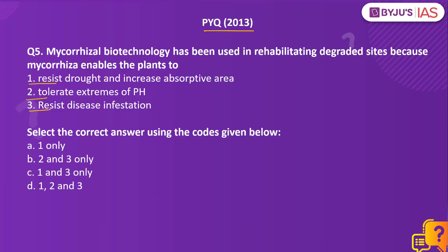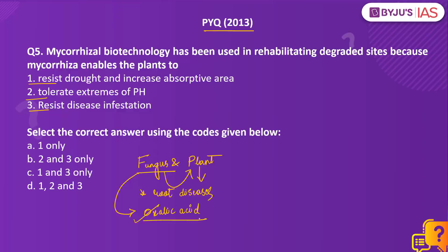A mycorrhiza is a mutual symbiotic association between a fungus and a plant. It refers to the role of the fungus in the plant's rhizosphere, that is its root system. The mycorrhizal fungi helps the host by absorbing nutrients and water from the soil and transferring them to the host. It also helps host plants withstand root diseases by producing oxalic acid, which suppresses root diseases. Mycorrhizal plants have high tolerance to adverse soils, high pH, high temperature, drought, and toxic heavy metals. Therefore all three statements are correct and the right answer is option D — 1, 2, and 3.